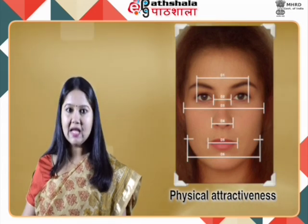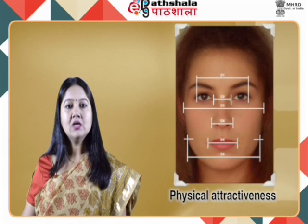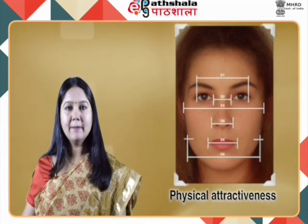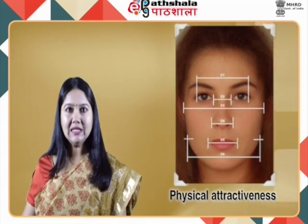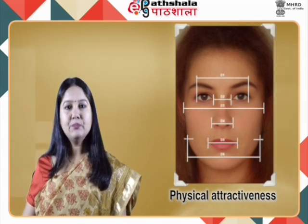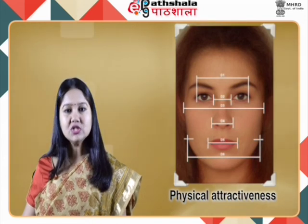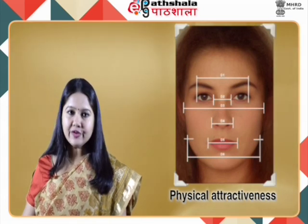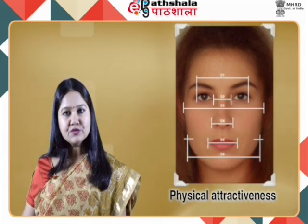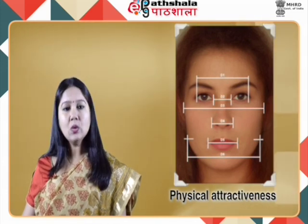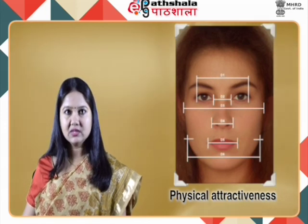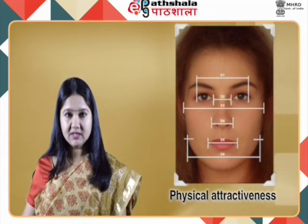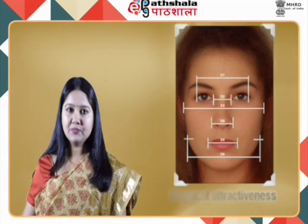They also found that women judged as attractive can be put under two groups: those having child-like features and those having mature features. Another approach is given by Langlois and Roggman, who used computer digitizing to combine multiple faces into one, leading to a composite image. They reported that composite faces are rated as more attractive than individual faces used to make the composite, and that the more faces that are averaged, the more beautiful the resulting face. They also found that people are more attracted to symmetrical than to asymmetrical faces.